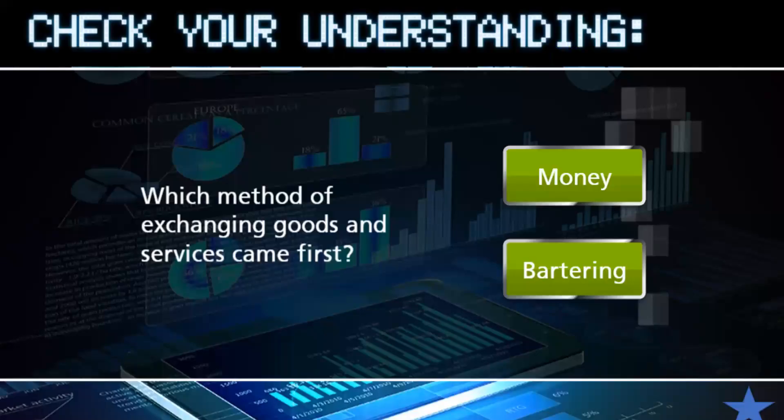Our first check-your-understanding question is: which method of exchanging goods and services came first — money or bartering? The correct answer is bartering, because of what we saw last class. Money evolved later after people realized the limitations of a bartering system.